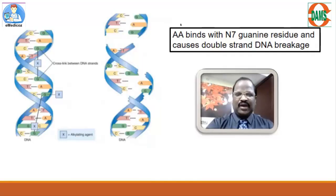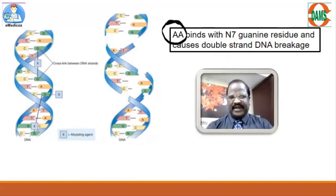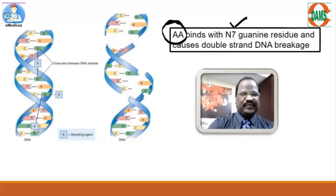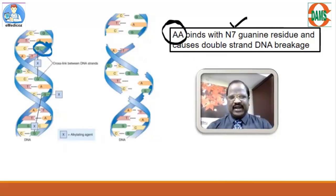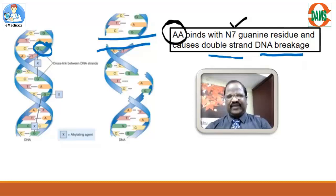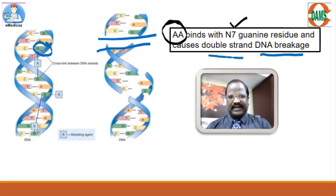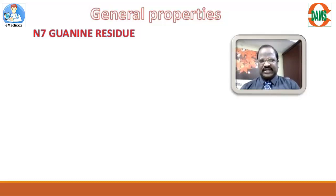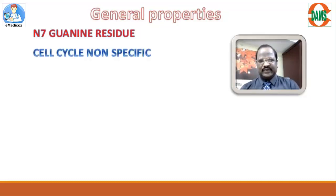Regarding mechanism of action: all alkylating agents bind with the N7 guanine residue, meaning they bind with the guanine residue at position N7, thereby causing double-stranded DNA breakage. They destroy the DNA in various phases of the cell cycle, which means alkylating agents are cell cycle non-specific agents.